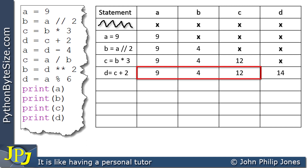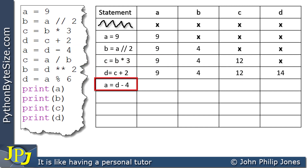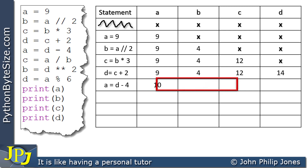We go back to the program: A is assigned D minus 4. We copy that statement down. D has the value of 14, and from this we're subtracting 4, so we place 10 in the A column because 14 minus 4 is clearly 10. We then copy B, C, and D — which are 4, 12, and 14 — down from above.